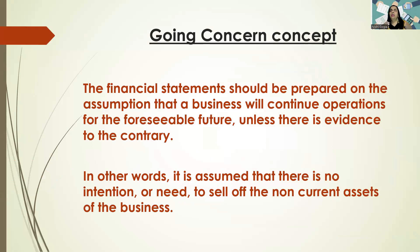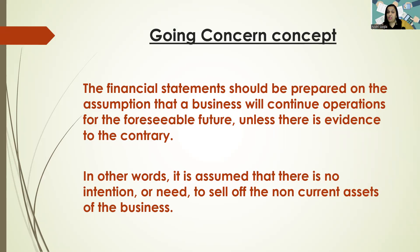Going concern concept basically means that you are going to prepare your financial statements with an assumption that the business will continue its operations for the foreseeable future, unless there is evidence against it. When we say foreseeable future, it could be 10 years, could be 20 years. Nobody can define foreseeable future, but it's not forever — it's something you can foresee. So unless you have evidence that the business is going to shut down in the near future, you have to carry on with that assumption.